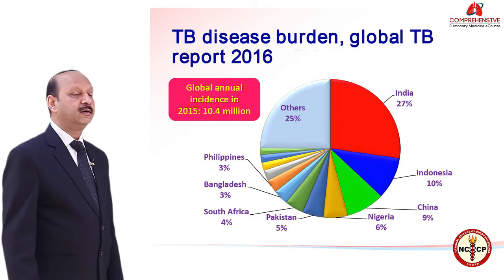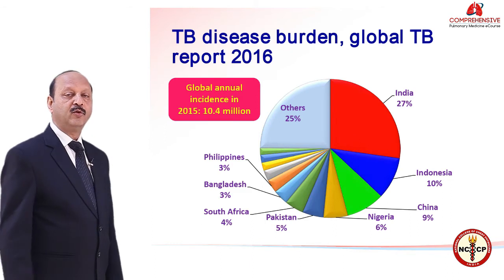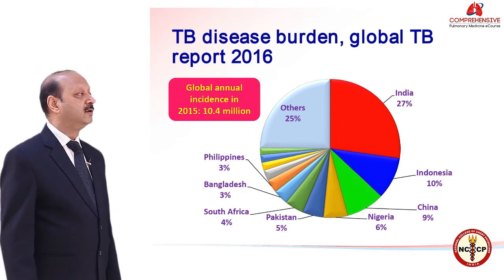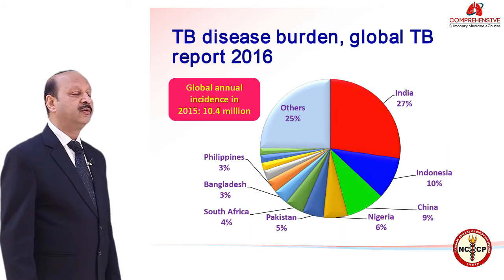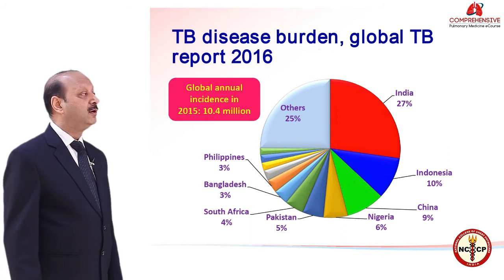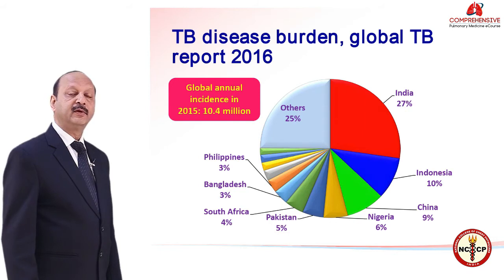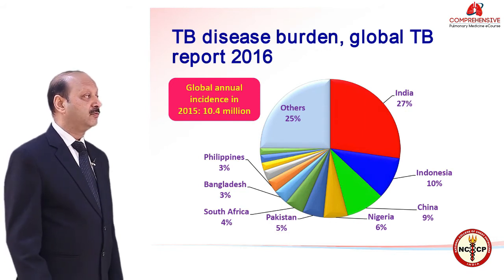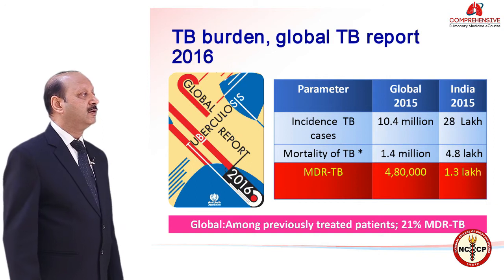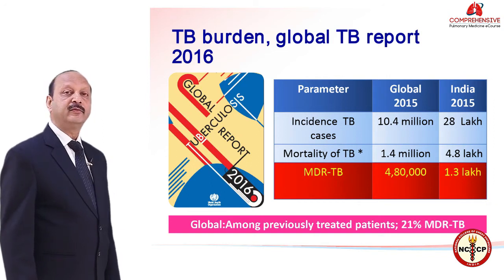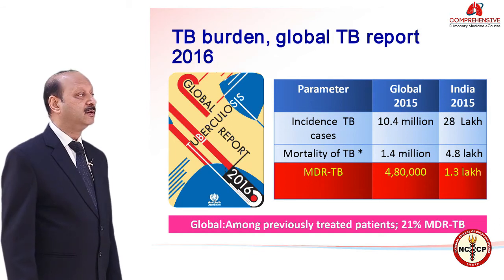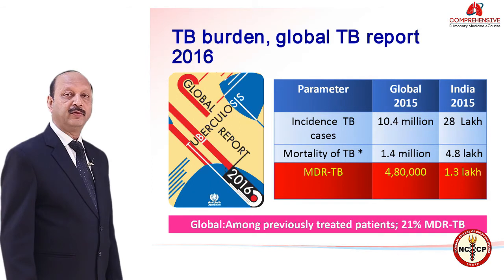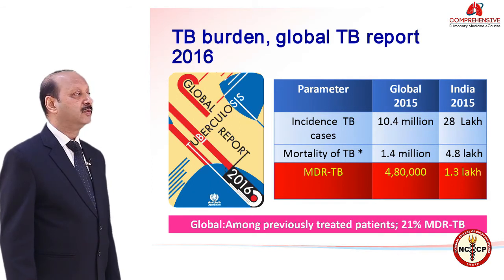Looking at the global annual incidence, the global annual report 2016 was recently released. It showed that in 2015 alone there were 10.4 million new cases of tuberculosis, and India contributed around 27 percent of them. Regarding MDR tuberculosis, the report found there were 4.8 lakh cases in 2015, and India had 1.3 lakhs of MDR tuberculosis cases in 2015.